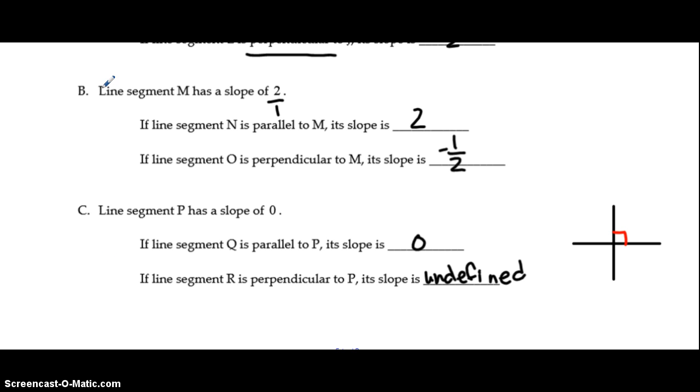Here we've got example B. Line segment M has a slope of 2. So if a line is parallel it will have the same slope also being 2. Another line segment O is perpendicular. So we're going to change the sign from a positive to a negative. And we don't see the fraction here but whole numbers can always be written over 1. So when we flip that it becomes 1/2. So the perpendicular line has a slope that's negative 1/2.